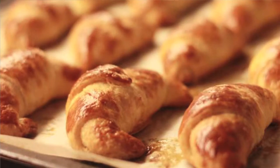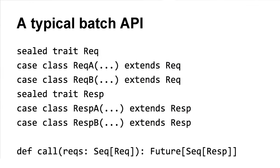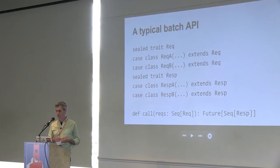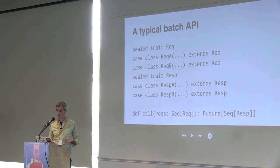This is a pretty typical Thrift-level interface at Twitter. We have some request type and some response type. The request type is kind of heterogeneous — there are a few different arms of it. The responses match up with the requests: when you make a request A, you get back a response A; when you make a request B, you get back a response B. And often this is a much larger set of instances for the trait. So then we have this typical batch-oriented API where we take a sequence of requests and return a future of a sequence of responses. This is the setting where all of our RPC calls are represented by futures.